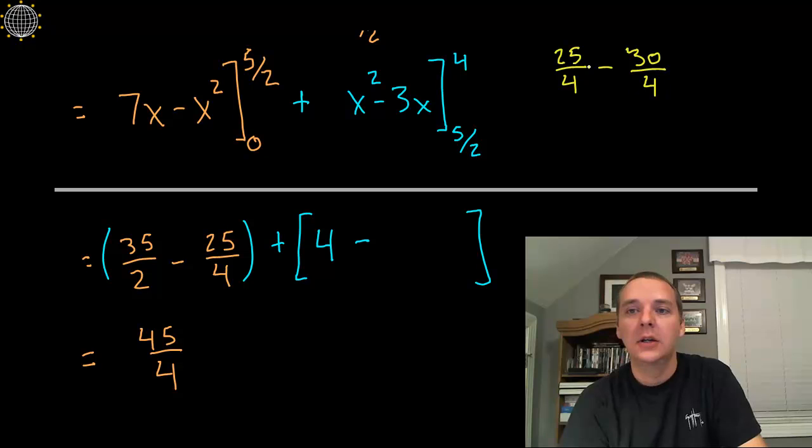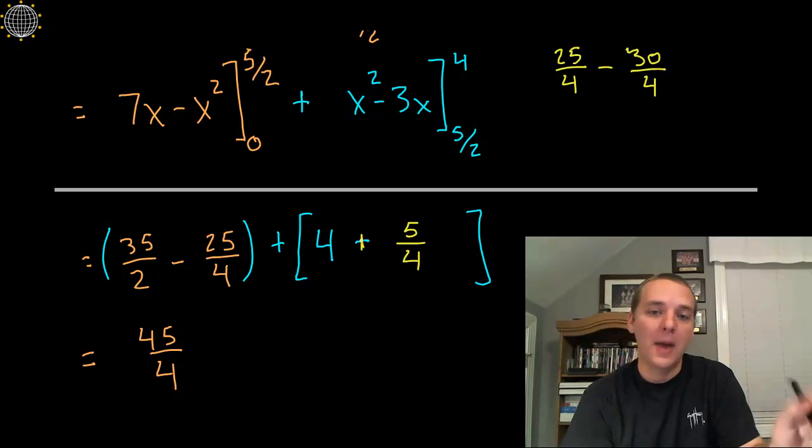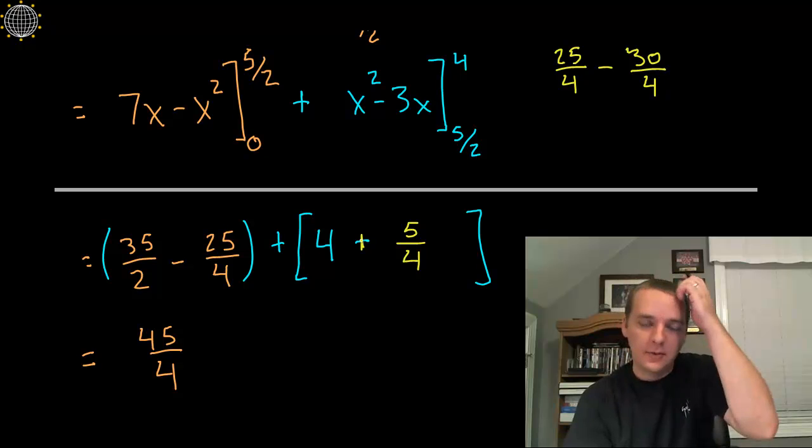So this net total would give you negative 5 over 4. So in total we'd actually have a plus 5 over 4 from the minus the negative 5 over 4.